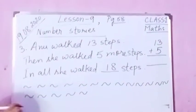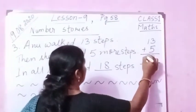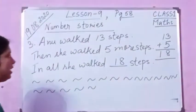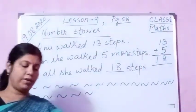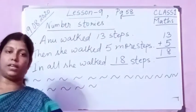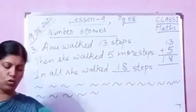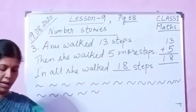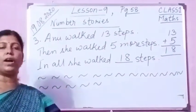Together we are adding. You can count here and write, or you just count and write down 18. Okay children, in today's class we did number stories 1, 2, and 3. Please practice in the way I taught you. In the next class I will do number 4 and 5. Thank you.